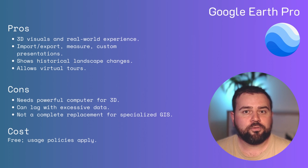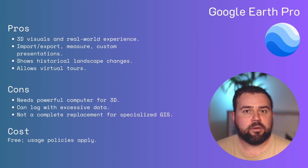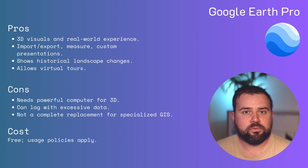It also allows for the creation of virtual tours and simulation. The cons of Google Earth Pro is that it requires a fairly powerful computer for optimal performance, especially in 3D mode. The vast amount of data can sometimes make it slow or laggy, and while it offers GIS capabilities, it may not replace a dedicated GIS software for specialized tasks. Google Earth Pro is free to use for both personal and professional purposes. There are no associated subscription fees, but there are usage policies to ensure fair and non-abusive consumption of their resources.